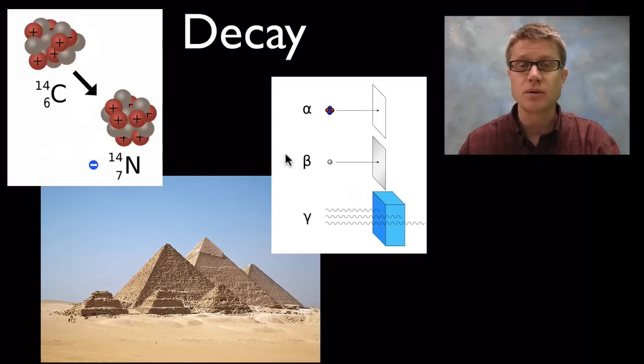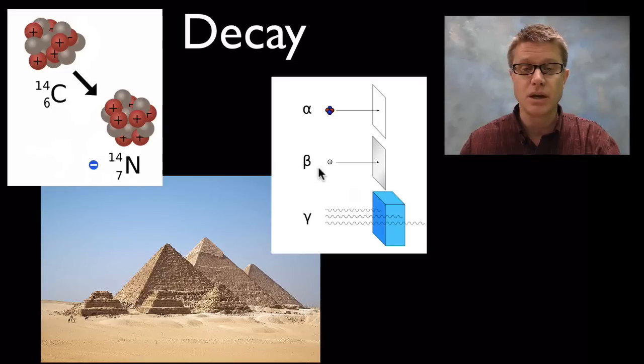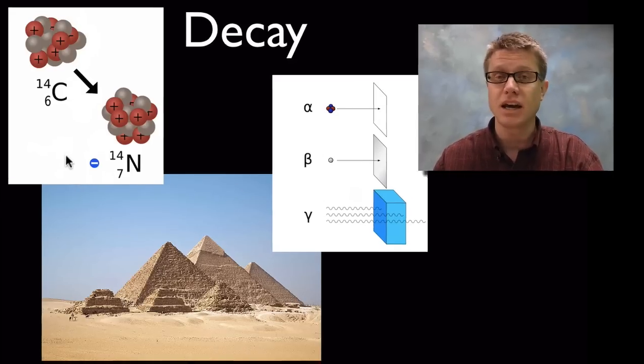Now as we get decay we get different forms of radiation. We can have alpha, beta and gamma particles that are given off. In this case we'd have beta decay.